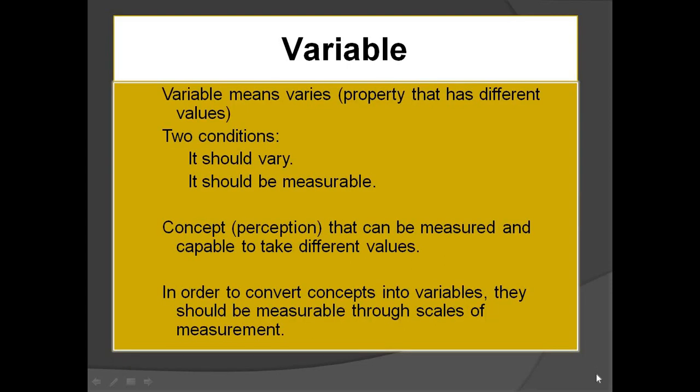To start with, what is a variable? A variable is something which varies. There are two conditions: first, it should vary, and second, it should be measurable. That means we can call a concept a variable only if it is measured and it has different values. In order to convert concepts into variables, they should be measurable through scales of measurement.